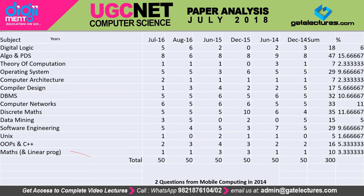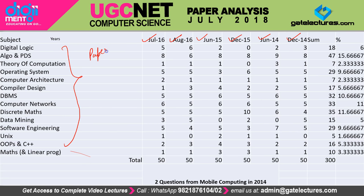This is the Paper 2 analysis for July 2016, August 2016, June 2015, December 2015, June 2014, and December 2014. From these previous UGC NET question papers, looking at all subjects in Paper 2, we found that 6% of questions came from digital logic, 15.67% from programming, data structures and algorithms, 2.33% from theory of computation, 9.66% from operating systems, 2.33% from computer architecture, and so on. You can pause this video to review this full subject-wise analysis.